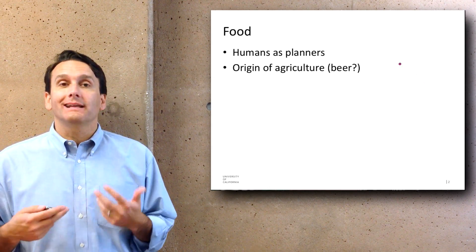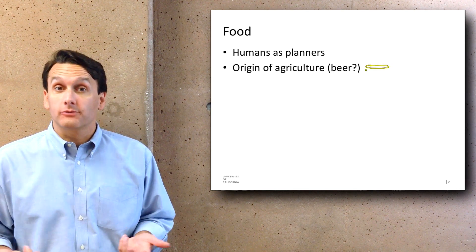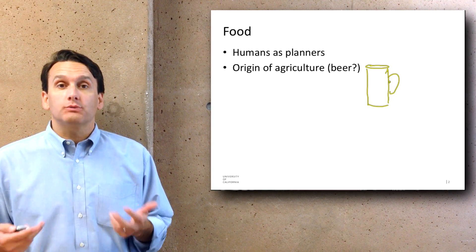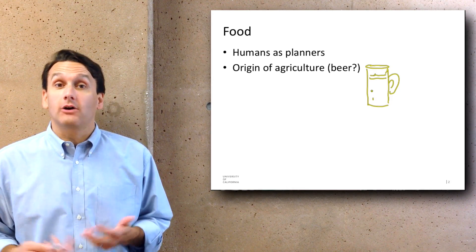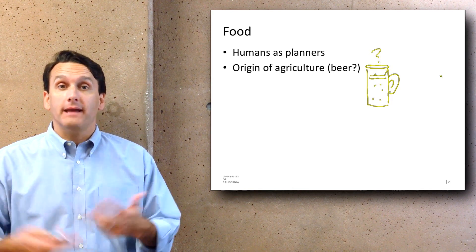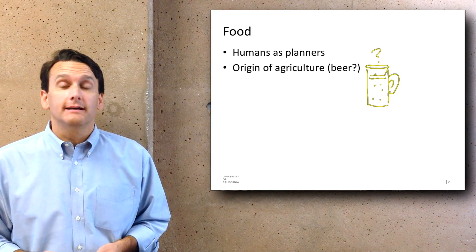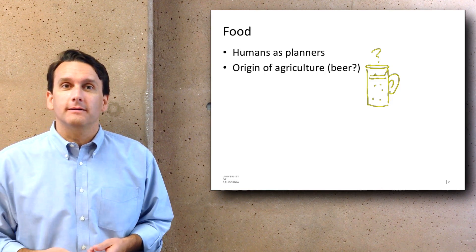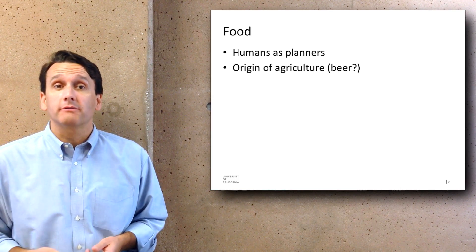Agriculture certainly allows for the production of a lot more food than we had when we were hunter-gatherers as a species. It's also been proposed that one of the reasons why we may have begun agriculture is to produce grain in order to make alcohol — that the idea of having enough grain to ferment into beer as a surplus was very desirable to humans. The jury's still out on whether that's exactly why it evolved, but it's been proposed by researchers.